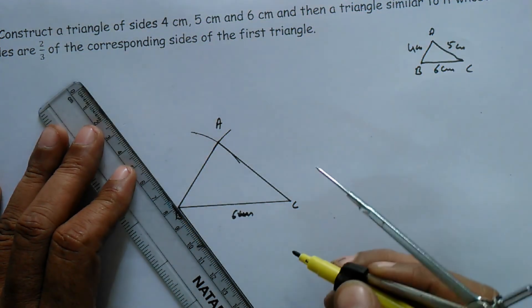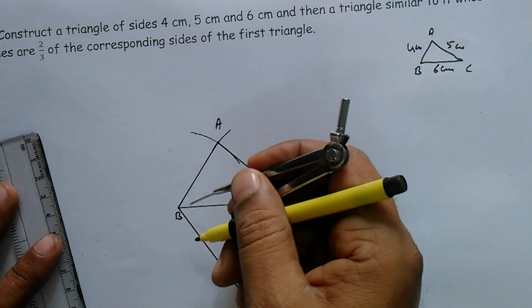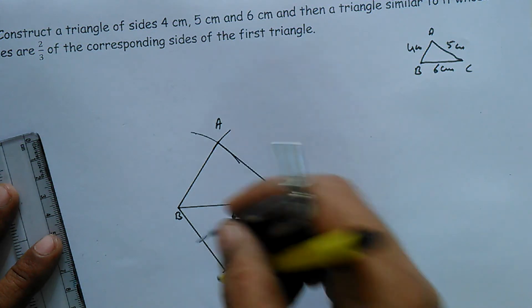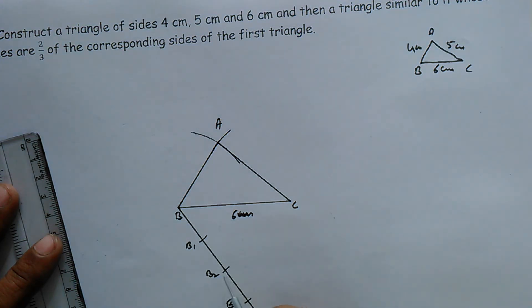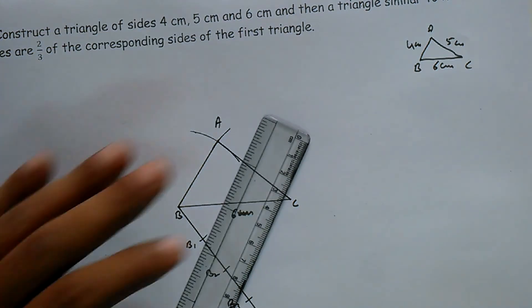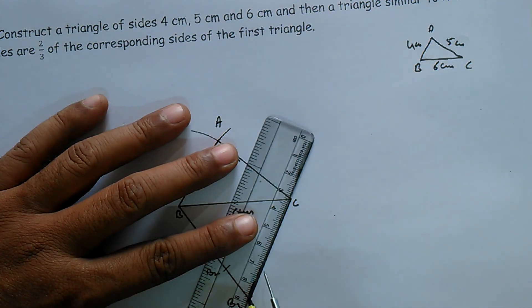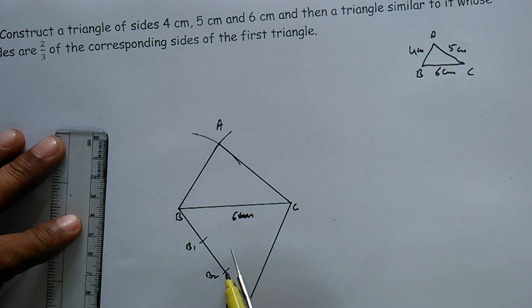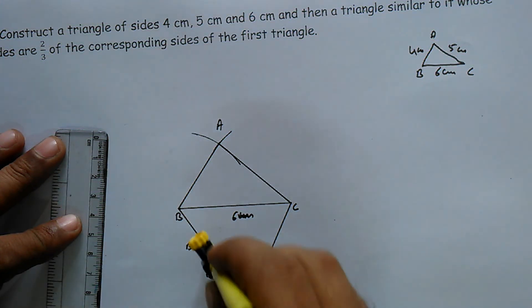This is the point B. We are naming B1, B2, B3. Join B3 to C — which is the denominator. In this denominator, we have to join C, and we have to draw B3C. First, we measure an acute angle and then we measure the angle.